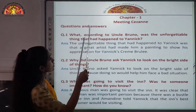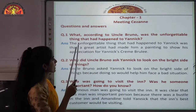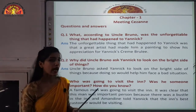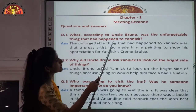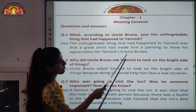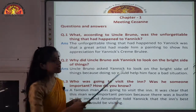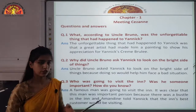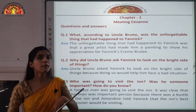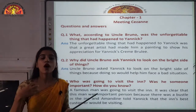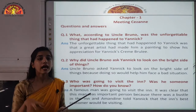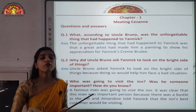Now we are going to start with the copy work, question number 1: What according to Uncle Bruno was the unforgettable thing that had happened to Yannick? The answer: the unforgettable thing was that a great artist had made Yannick a painting to show his appreciation for Yannick's Creamy Brûlée — a kind of English dish. Yannick made a special dish for the famous guest, and in return the visitor painted on the tablecloth as a reward.